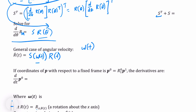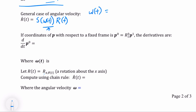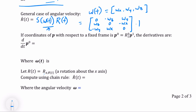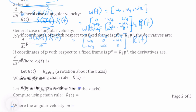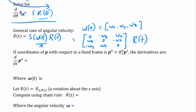This isn't a mystery — we saw earlier how to compute omega. If omega(t) = (omega_x, omega_y, omega_z), then the skew-symmetric of omega is the matrix [0, -omega_z, omega_y; omega_z, 0, -omega_x; -omega_y, omega_x, 0], and we multiply that by R(t).